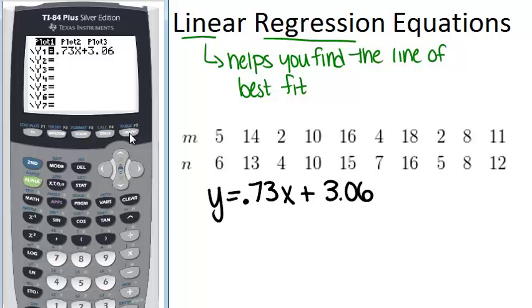So go into y equals and type in the equation .73x plus 3.06. And then we can graph, and we should see the line and the graph at the same time. And look at that, the line goes through those points pretty well. That does look like a line of best fit.